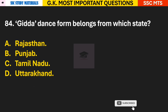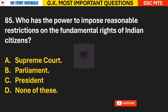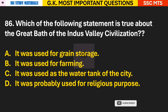Question 84: The Giddha dance form belongs to which state? Answer B — Giddha dance form belongs to Punjab. Question 85: Who has the power to impose reasonable restrictions on the fundamental rights of Indian citizens? Answer B — Parliament.